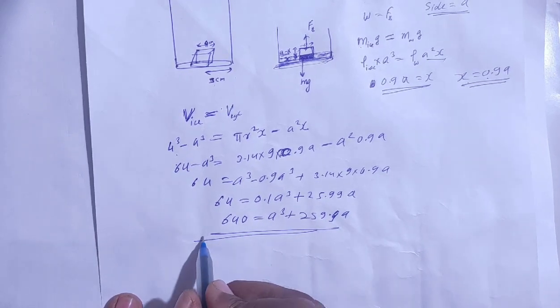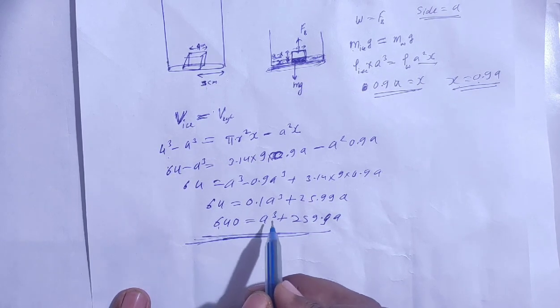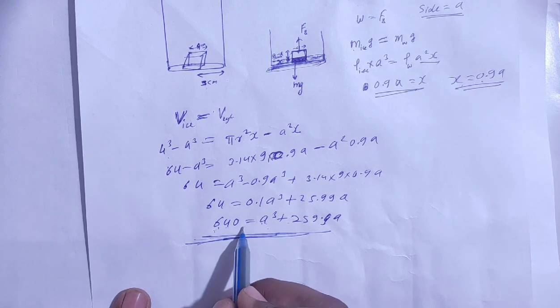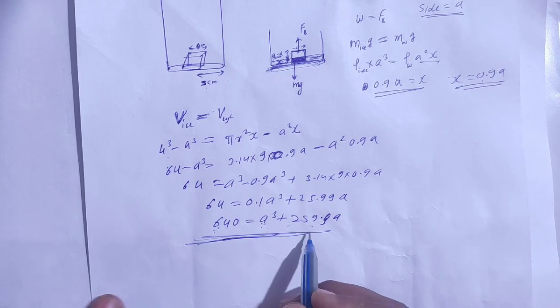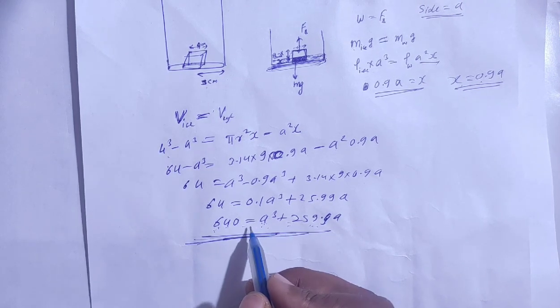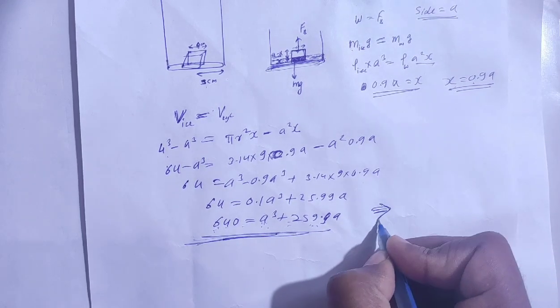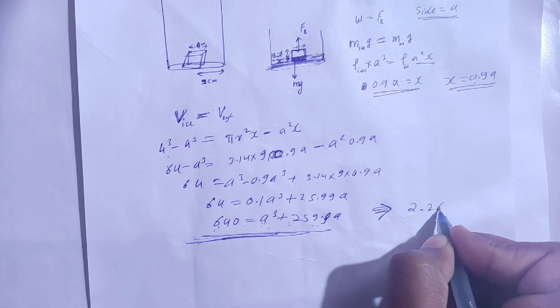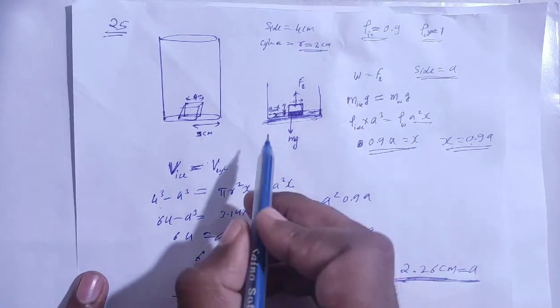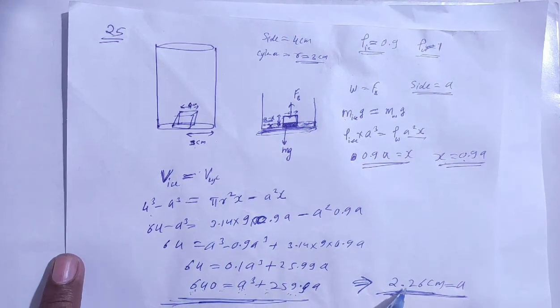Now what value of a satisfies this equation? Hit and trial method apply. So I will put 1, so 640 plus 259, doesn't satisfy. Put 2, so 640 is a cubed 8, about 500. Put 2 or 3. From the options, only option C will satisfy: 2.26 cm. When it floats, the size of the edge is 2.26 cm.